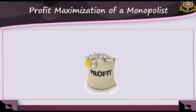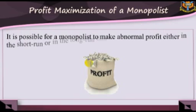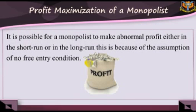7. Profit maximization of a monopoly. It is possible for a monopolist to make abnormal profits either in the short or in the long run. This is because of the assumption of no free entry condition. Thus, for a monopolist to maximize profits in the short run, marginal revenue must equal marginal cost. This is shown in Figure 9.3.